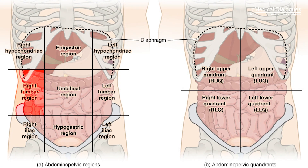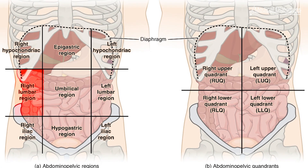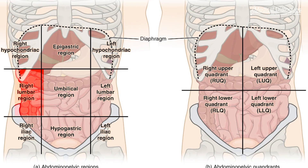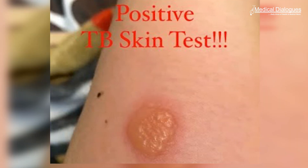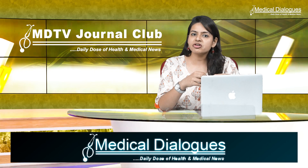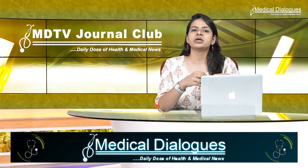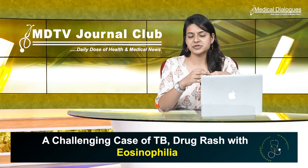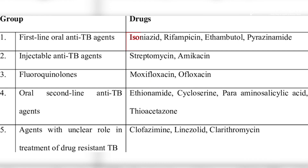On examination, she had localized tenderness in the right lumbar region. Her tuberculin skin test was strongly positive and ultrasonography revealed a right-sided abscess. She was empirically started on anti-tubercular drugs — weight-based isoniazid, rifampicin, pyrazinamide, and ethambutol — from an outside center, after which her fever resolved in about two weeks.